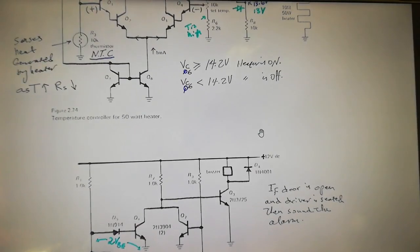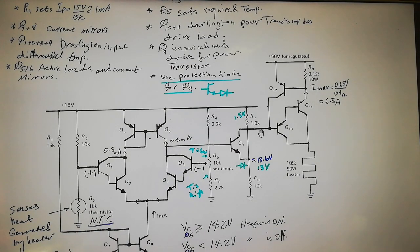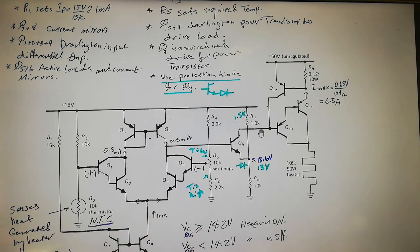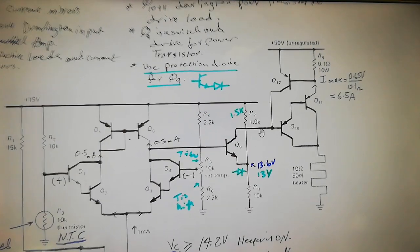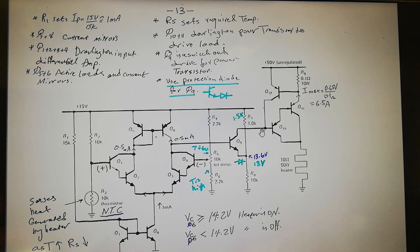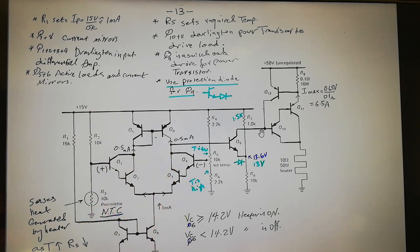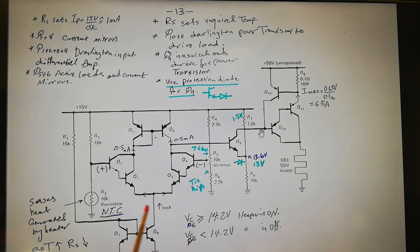Here's something more interesting — an applied example: a temperature controller for a 50-watt heater. Look at all the beautiful things in this circuit: a current mirror active load, Darlington pairs from both sides, a beautiful current source at the bottom, and a nice current limiter at the top. There are a lot of beautiful circuit elements here.